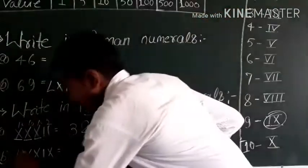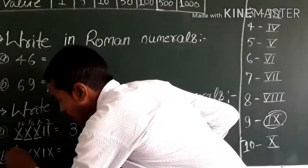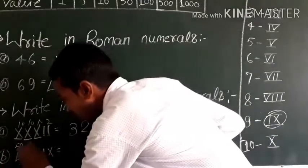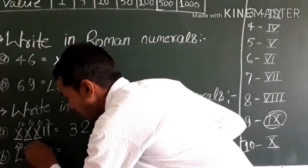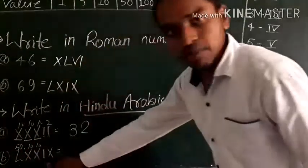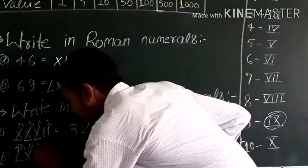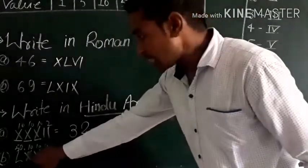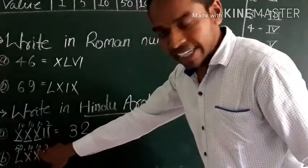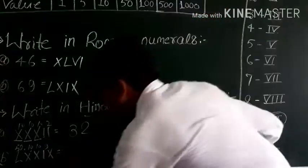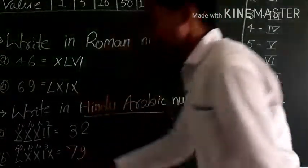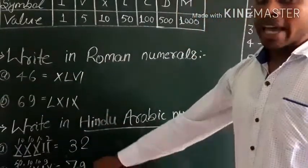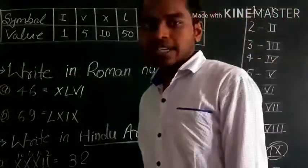Continuing with more examples: L is 50, X is 10, and IX is 9. Combining these — 50 plus 10 plus 10 plus 9 gives us values like 69 or similar numerals. This demonstrates how the rules apply together to form Roman numeral representations. The concept should now be clear.